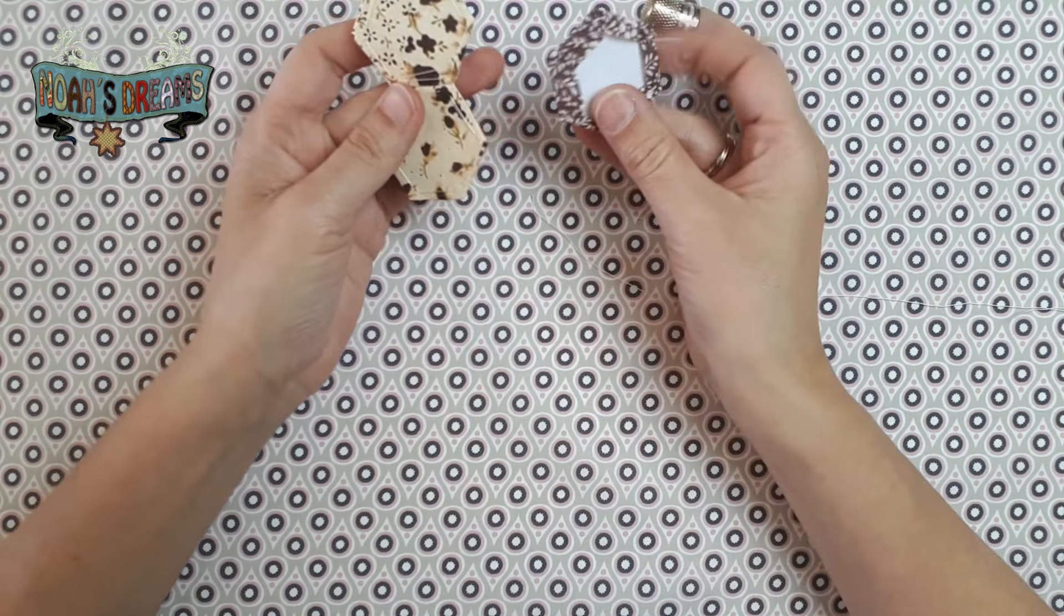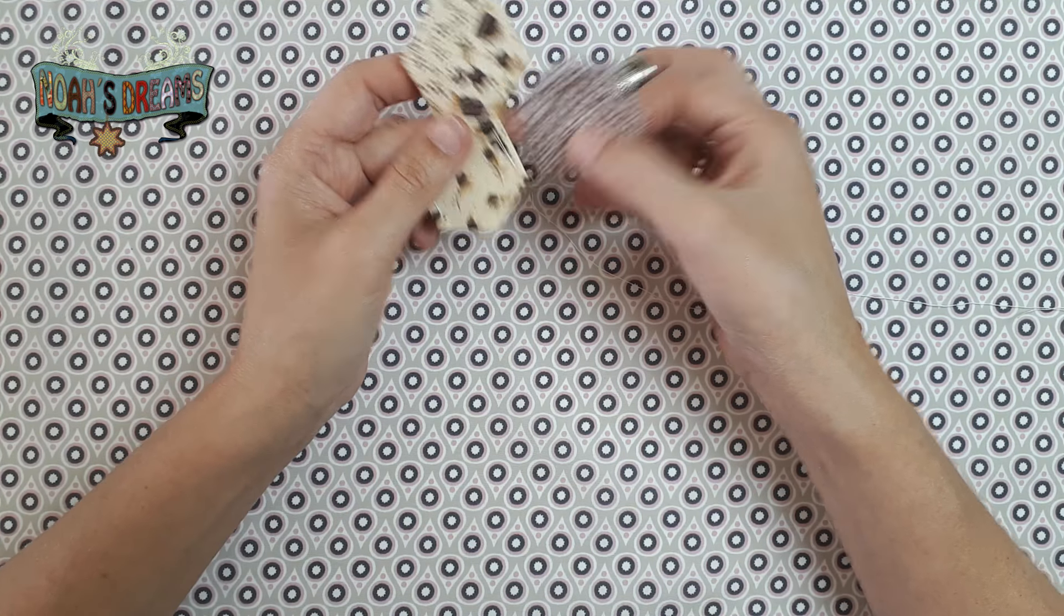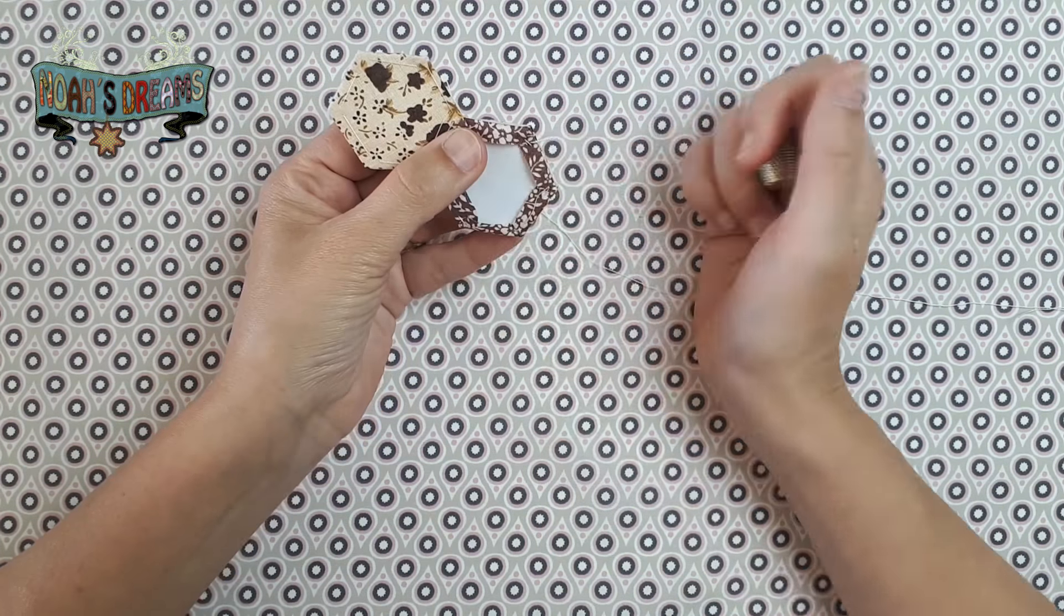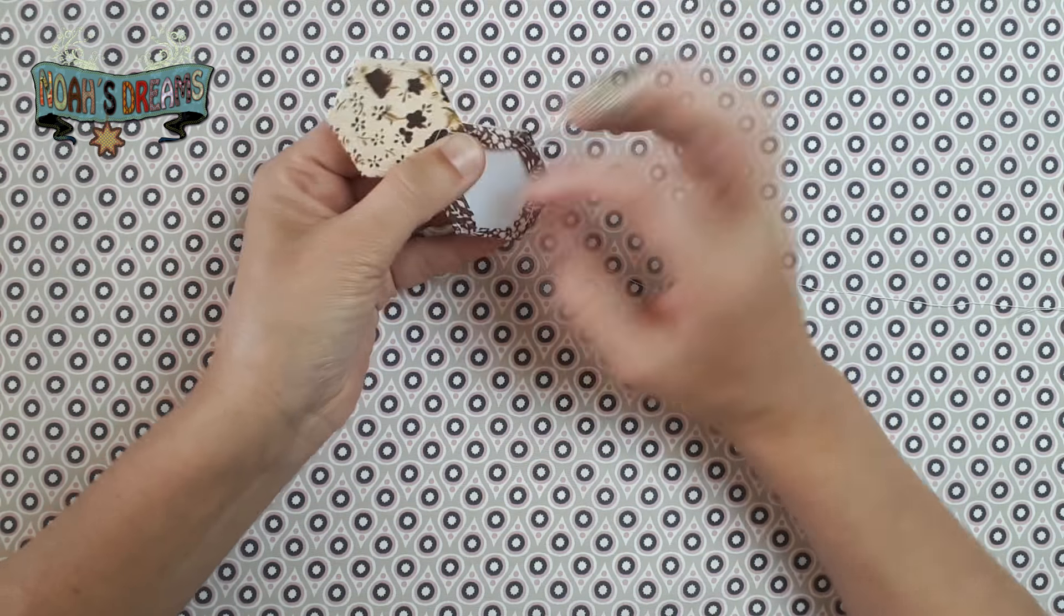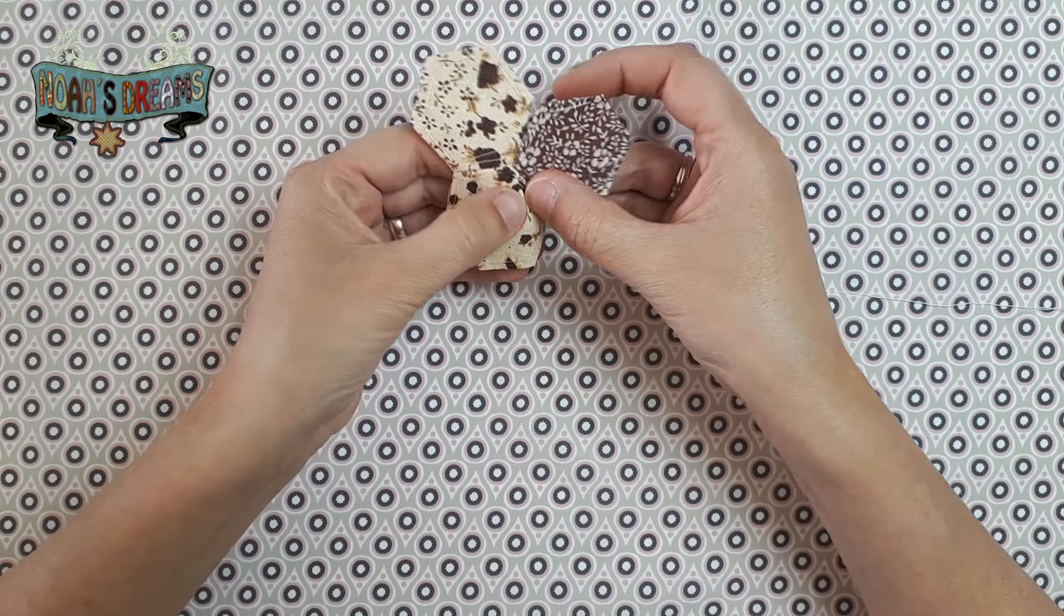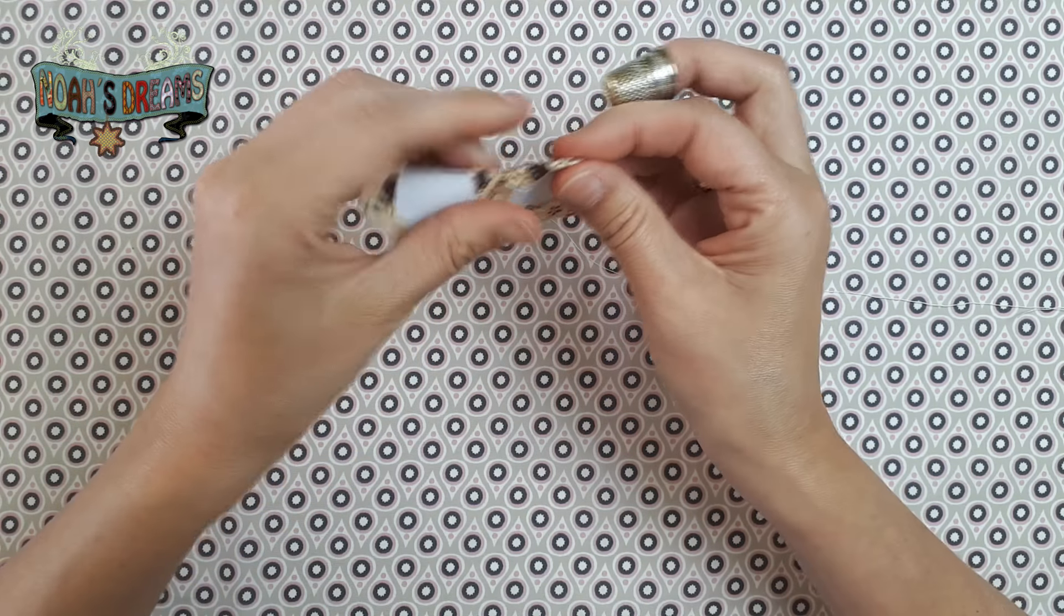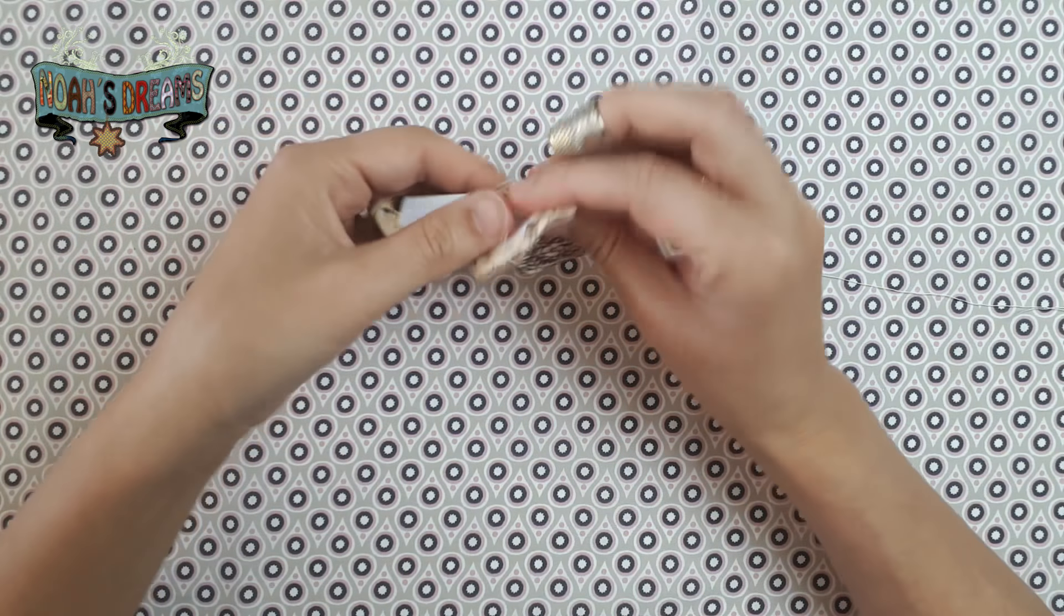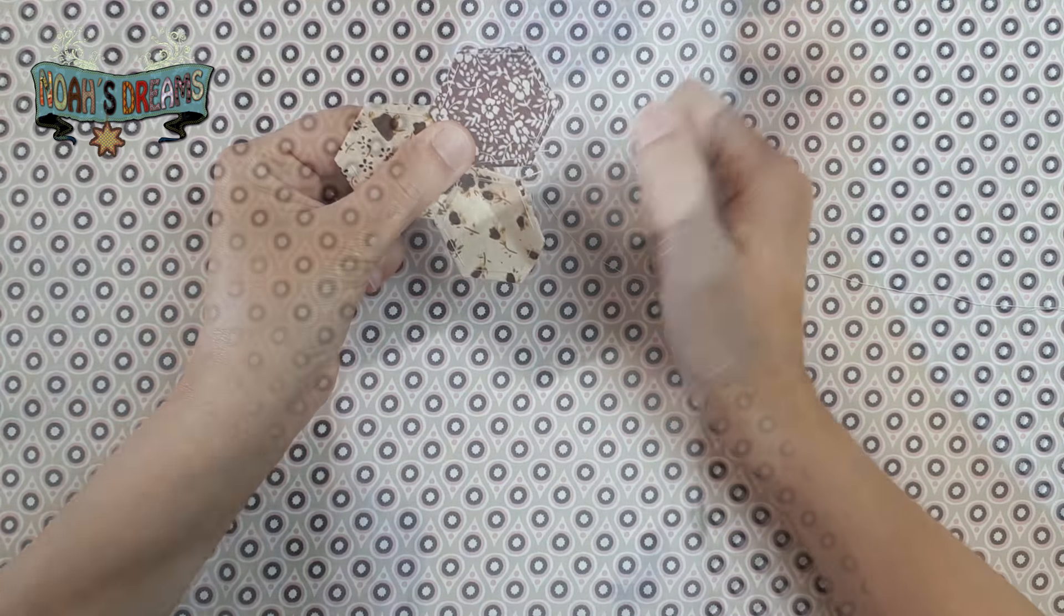¿Qué ocurre ahora si necesitamos unir en un lateral una pieza más? Pues en este caso, la siguiente pieza vendría aquí, en esta esquina, encajaría. Lo que tendríamos que hacer sería enfrentarla derecho con derecho con uno de los lados a los que va a ir unida. Pasamos la costura. Una vez que está cosido, abriríamos y doblaríamos hacia el otro lado para hacer coincidir la otra parte. Doblamos el papel para que no nos estorbe y continuamos por ahí. Así cuando lo abramos, pues estaría unida a la flor.